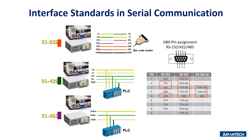In industrial applications, three interface standards are widely used: RS-232, RS-422, and RS-485, typically employing the DB9 connector with nine pins, found in industrial computers as the serial port. RS-232 uses eight of the nine pins for data transmission. RS-422 uses five pins. RS-485 uses only three pins, which represents an advantage over other configurations during equipment installation.